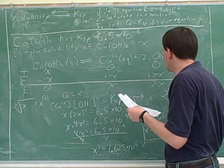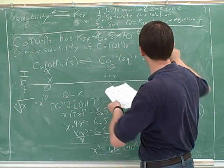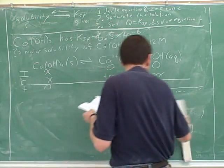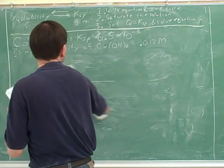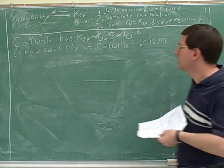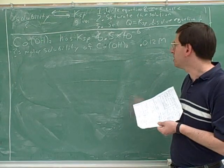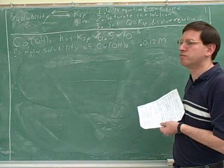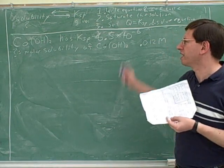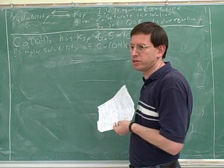So we got here that the molar solubility was 0.012 molar. What this means is if you start with pure water, you can dissolve 0.012 molar of calcium hydroxide. So we're just having the same setup? Yeah, well, I'm going to build on this.